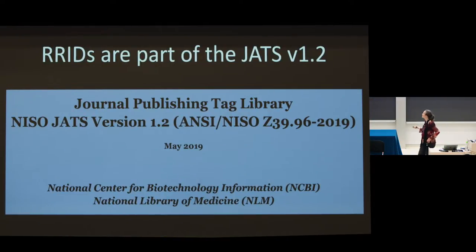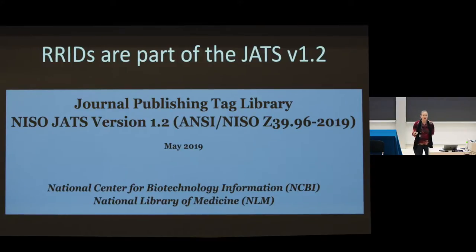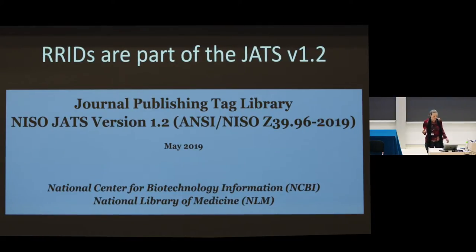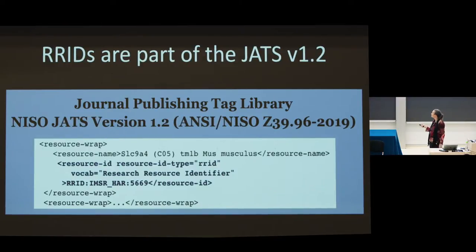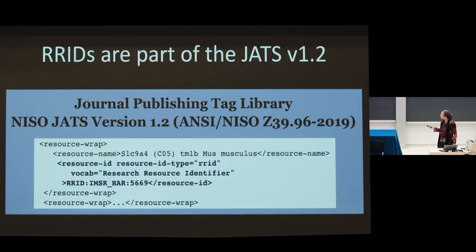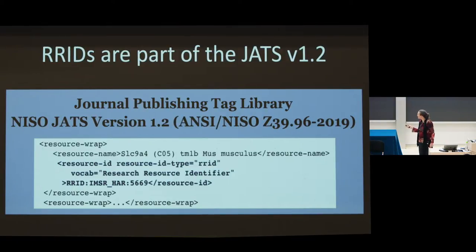Some new developments have occurred — RRIDs are now part of the NISO standard. This is the Journal Article Tag Suite, the XML standard for journal articles. Version 1.2, just released in May, now includes this little bit of code. This is an XML wrapper — I promise there's no other code in my talk. This is actually a mouse, an RRID for an IMSR Harlan mouse 5669, and it has now been immortalized by the National Standards Organization into this particular standard.